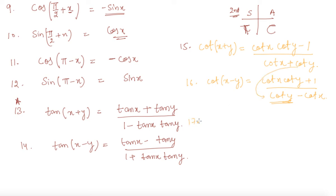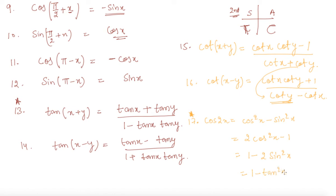Another very important formula from exam point of view is cos(2x). It equals cos²x - sin²x, or equivalently 2cos²x - 1, or 1 - 2sin²x, or also (1 - tan²x) / (1 + tan²x). You can derive all these from the identity cos²x + sin²x = 1.